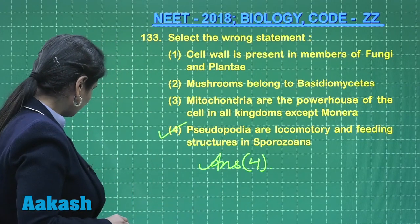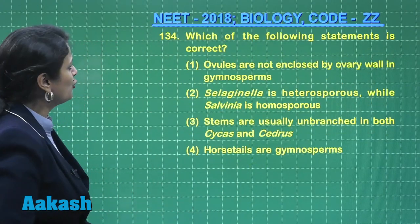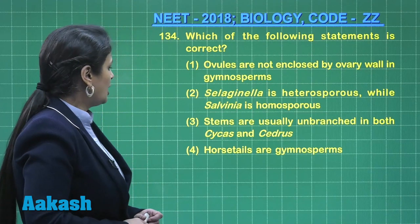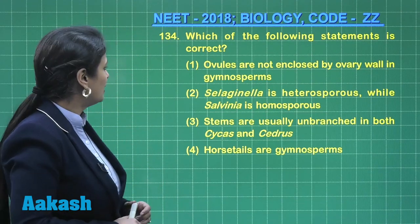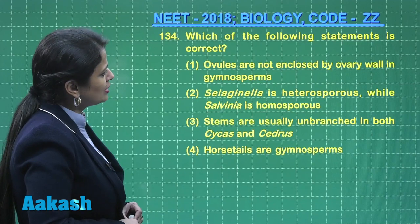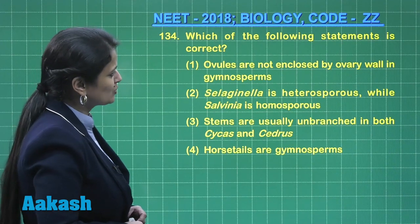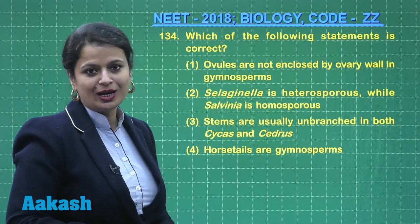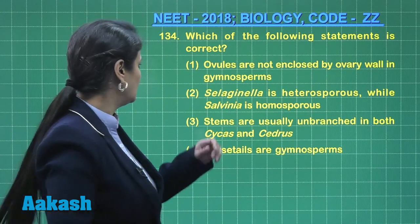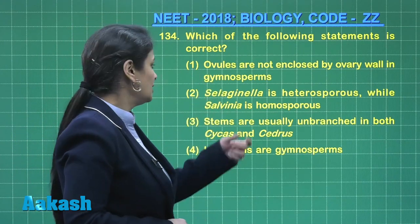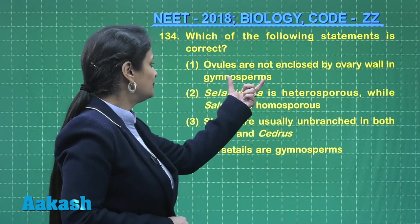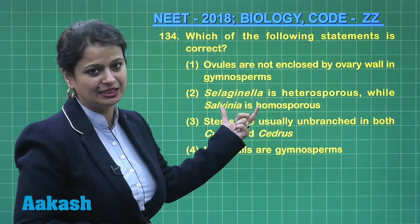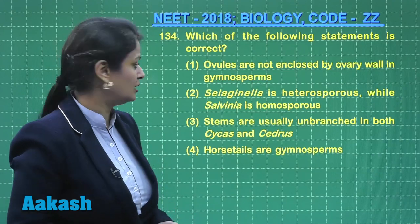Now coming to question 134: which of the following statements is correct? This question is related to the plant kingdom. Ovules are not enclosed by the ovary wall in gymnosperms — yes, that's why they form naked seeds. 'Gymno' means naked, and 'sperm' is derived from 'sperma' meaning seed, so they form naked seeds.